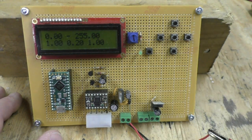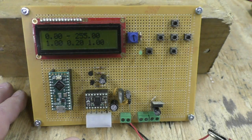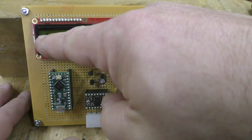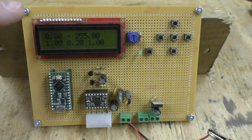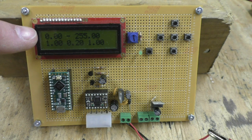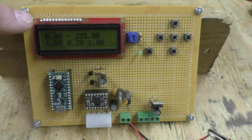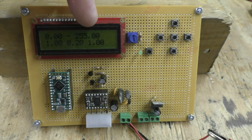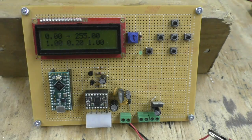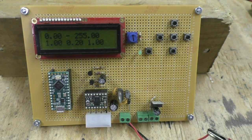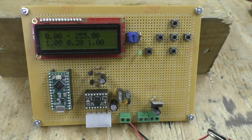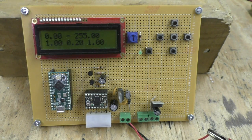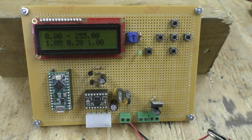This reading here, this reading here is the calipers. So if the filament coming out was 1.5 millimeters, this would say 1.5. And this number over here on the top right, that is the adjustment that the PID is making to either make the filament larger or smaller.